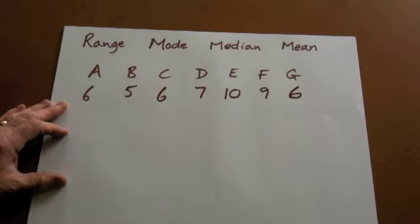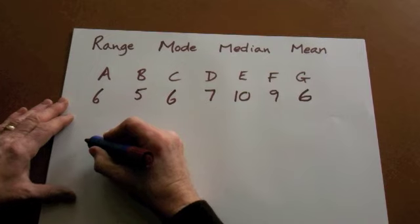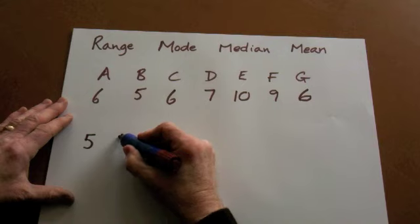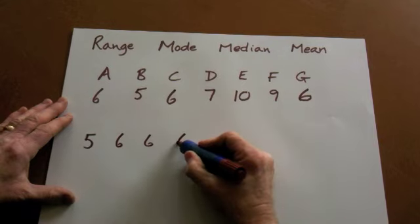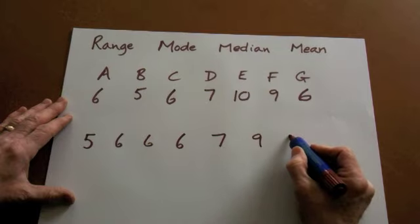Now it's a lot easier if we put these numbers into order. So the lowest is five. Then there's three people with six. One with seven. One with nine. One with ten.